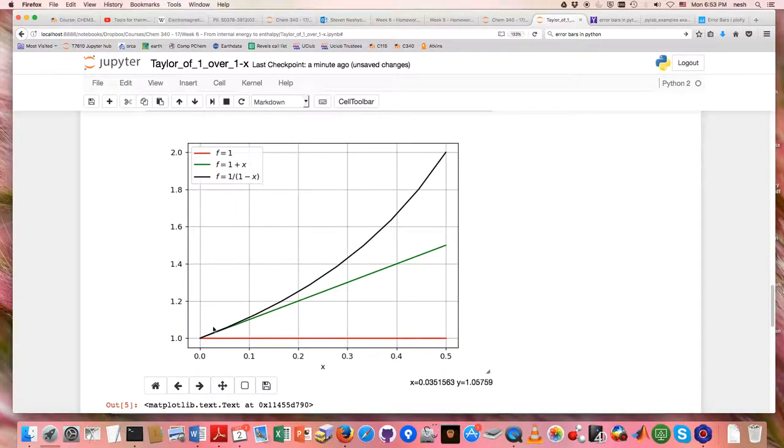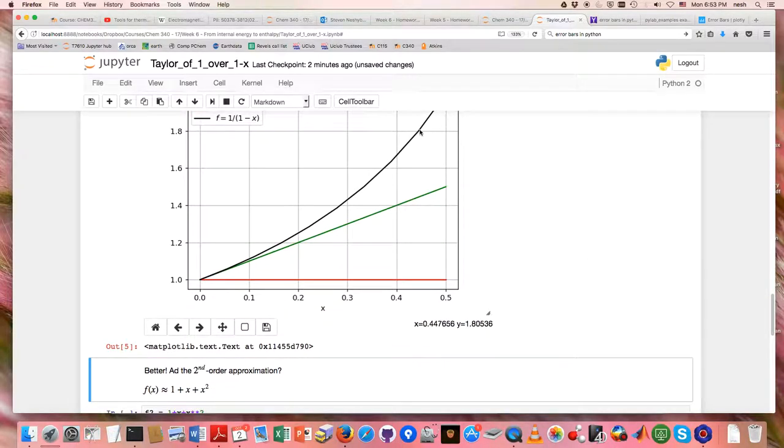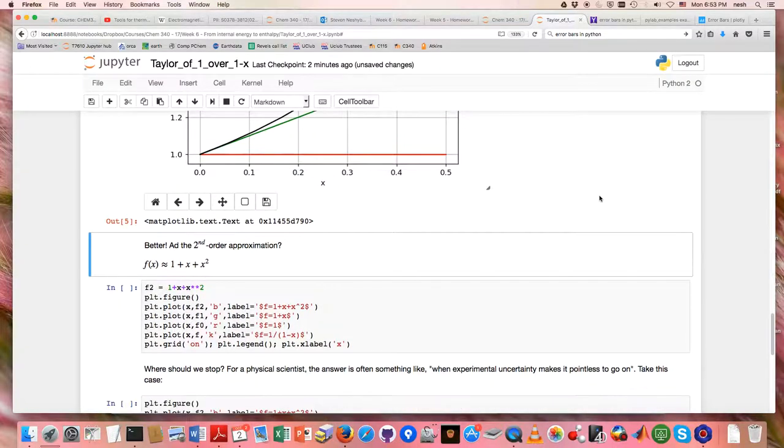And it does quite a lot better here for small x, but then starts to diverge from the real function, which is, again, that black line.